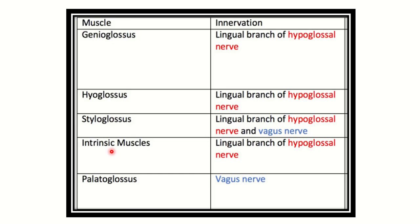These are the muscles of the tongue and their nerve supply: genioglossus is supplied by the hypoglossal nerve, hyoglossus is supplied by the hypoglossal nerve, styloglossus is supplied by the hypoglossal nerve. But palatoglossus, which is another extrinsic muscle of the tongue, is supplied by the vagus nerve.